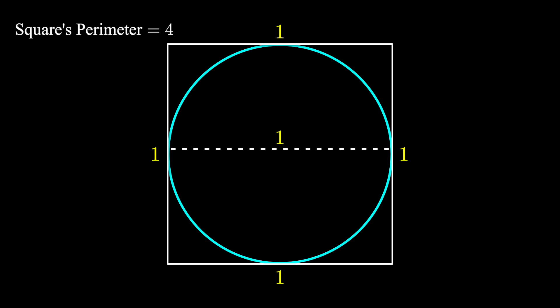First, draw a circle with diameter 1. Next, draw a square around it so the circle is perfectly inscribed in the square. Notice that this square has perimeter 4. If you add up all the lengths of its sides, each side is length 1, you get 4.